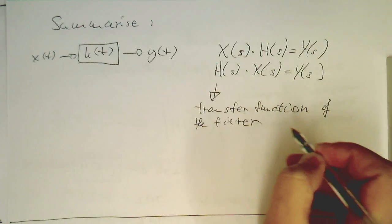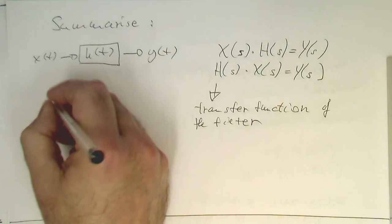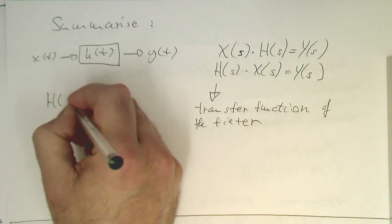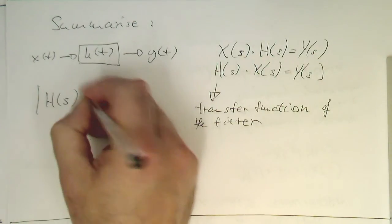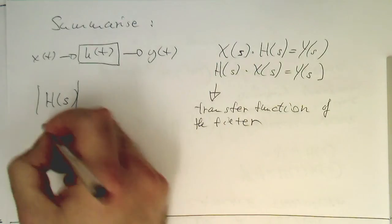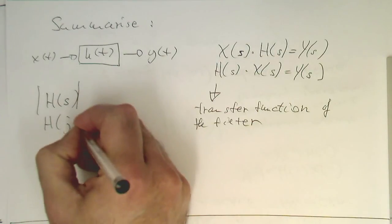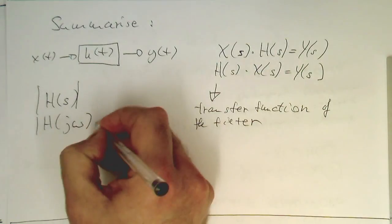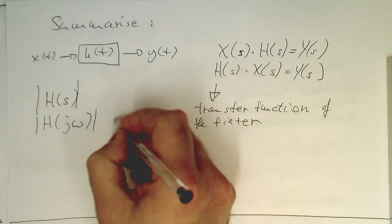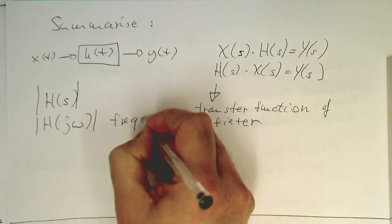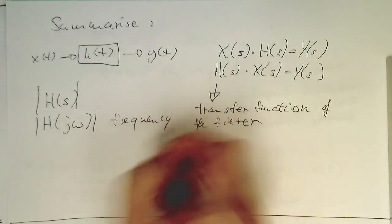So, what can we do with this h of s? We can do h of s and absolute value, or more precisely h of j omega.